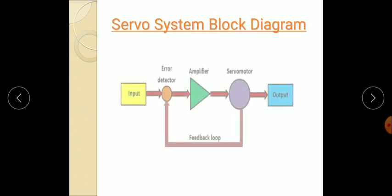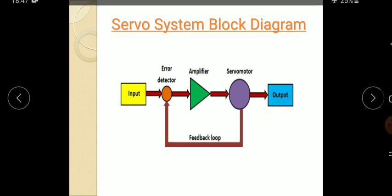Next, the servo system block diagram. In this, you can see the input, the error detector, the amplifier, the servo motor, the feedback loop, and the output.